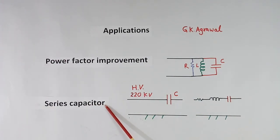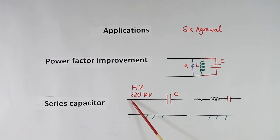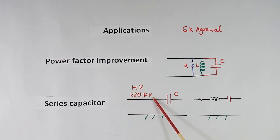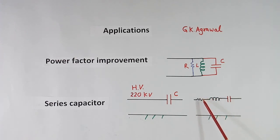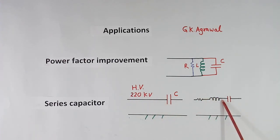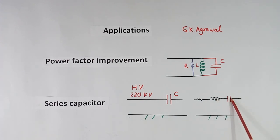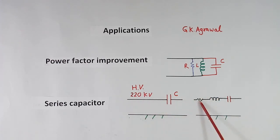Another application is series capacitor, also called series compensator. Power transmission is done using high voltage lines — maybe 220 KV, 3 phase. Now this wire will have resistance and inductance — this R and L are the values of the wire itself, not connected extra. Because of this inductance, transmission capacity of this transmission line comes down. To improve that, we connect a capacitor in series. This capacitor will cancel out this inductance, and power transmission capacity of this transmission line will improve.